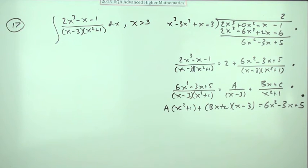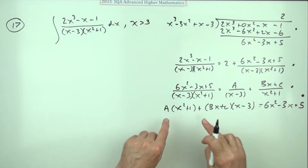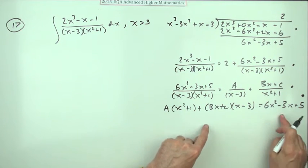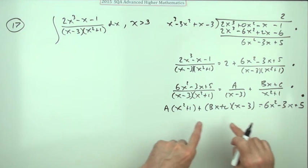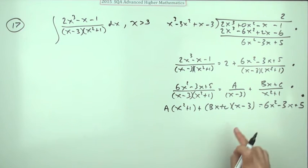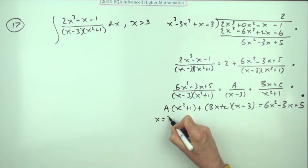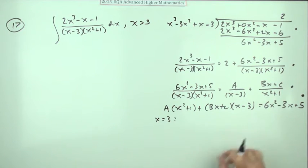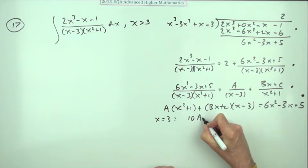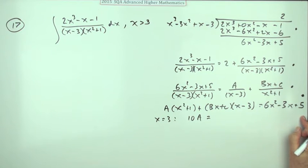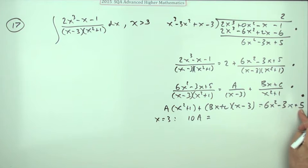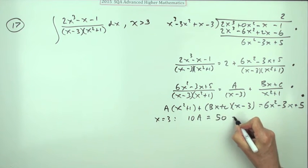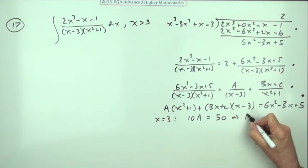Now, how do you find these three constants A, B, and C? There's two ways: you could pick appropriate numbers to substitute in for x, or compare corresponding coefficients. But certainly I would use this one first: x = 3, because that'll knock out that term and just leave me with 10A equals, but you've got calculation to do. We've got 54 - 9 plus 5, that was a relief, it's always relief when you get a nice number, which means A = 5.